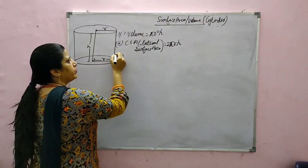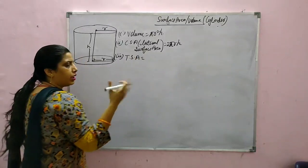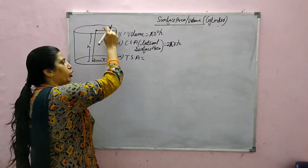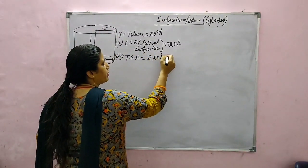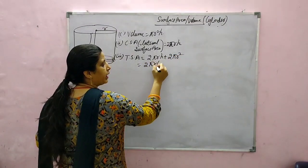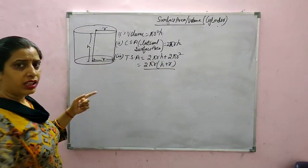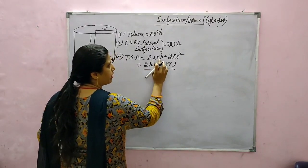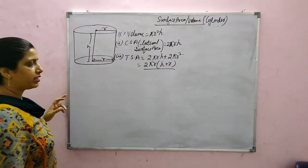Third is total surface area — inner, outer, all. It equals CSA plus area of both the circular ends, giving 2 pi R H plus 2 pi R square. You can factor out 2 pi R, so it becomes 2 pi R times (H plus R). This is the standard formula given in NCERT. But if you can't remember it, you can derive it as CSA plus area of both circular ends.